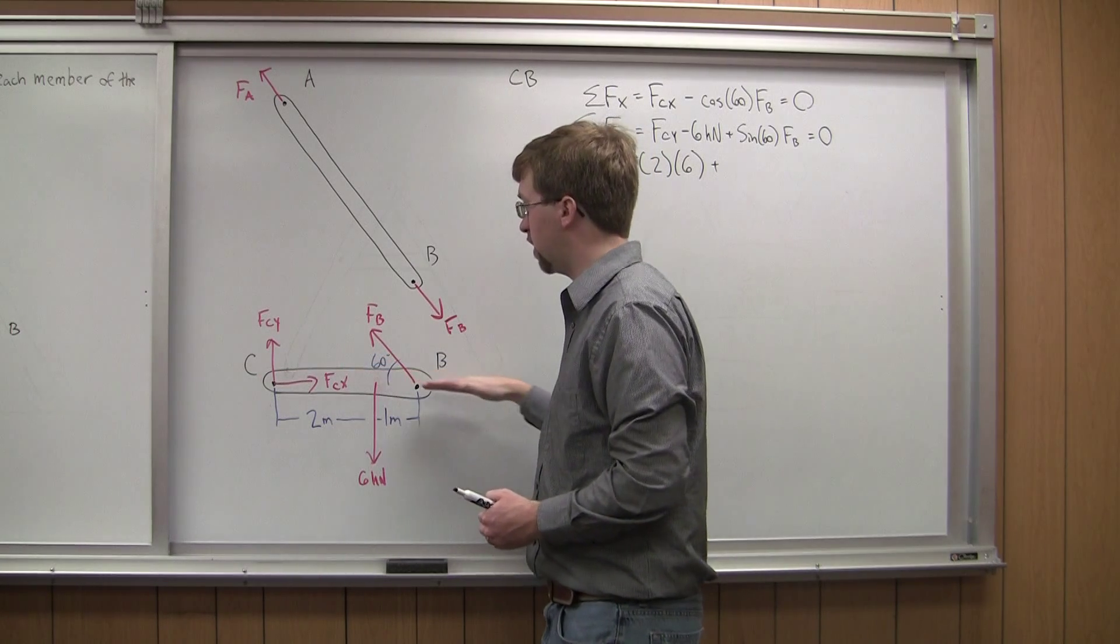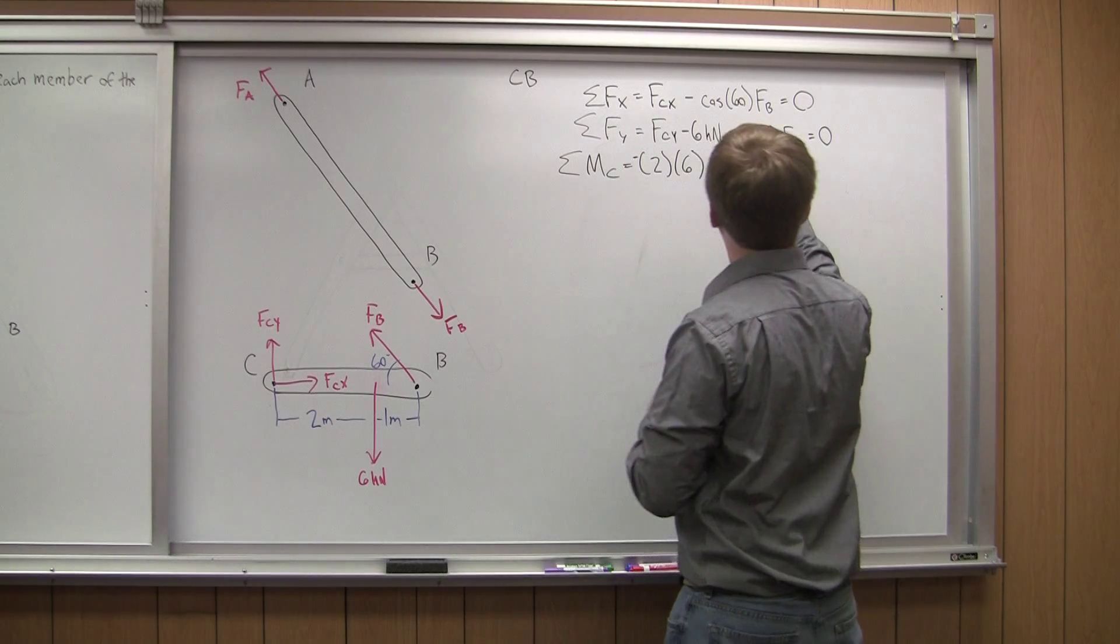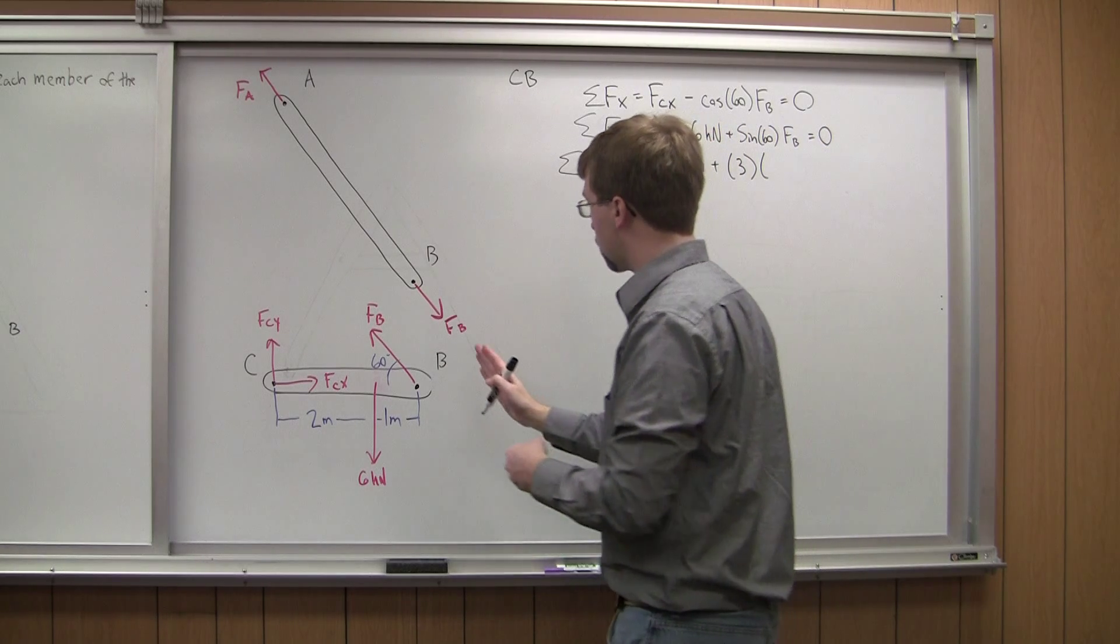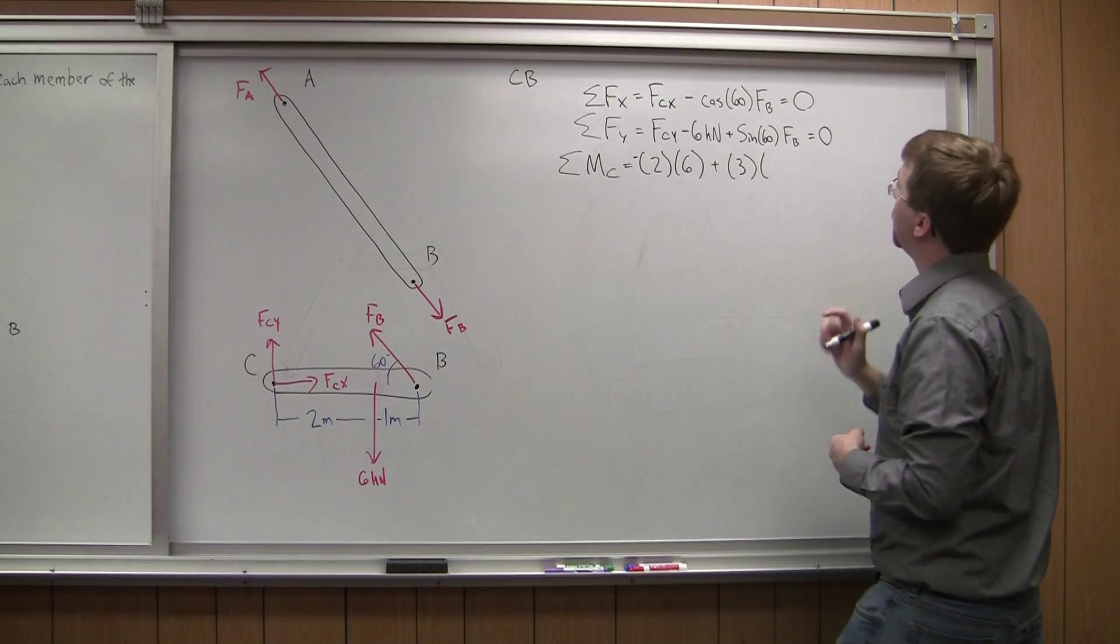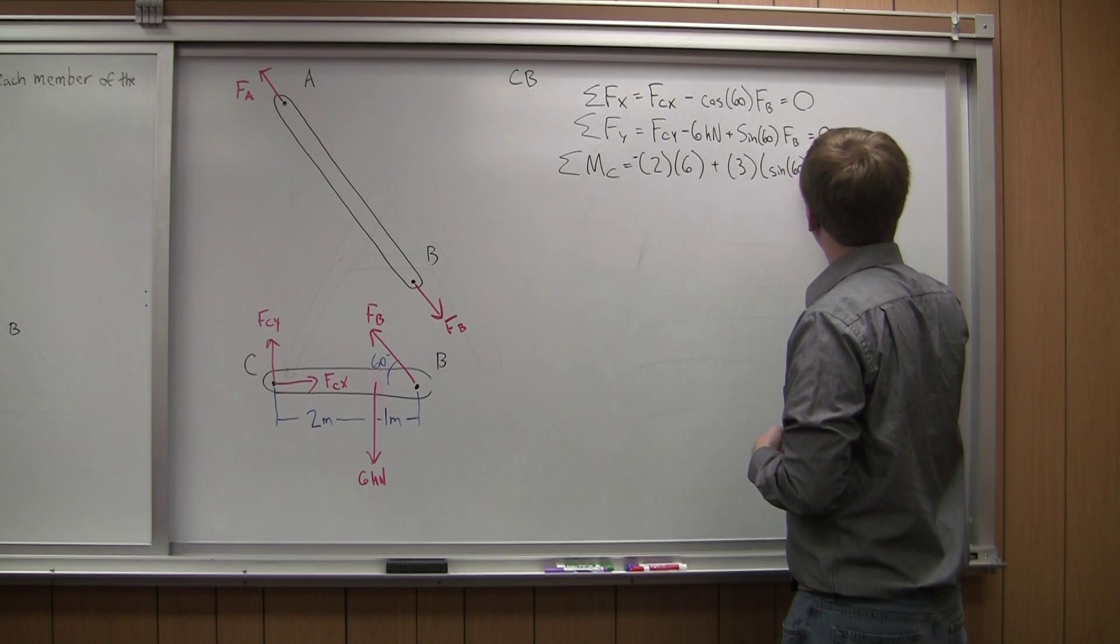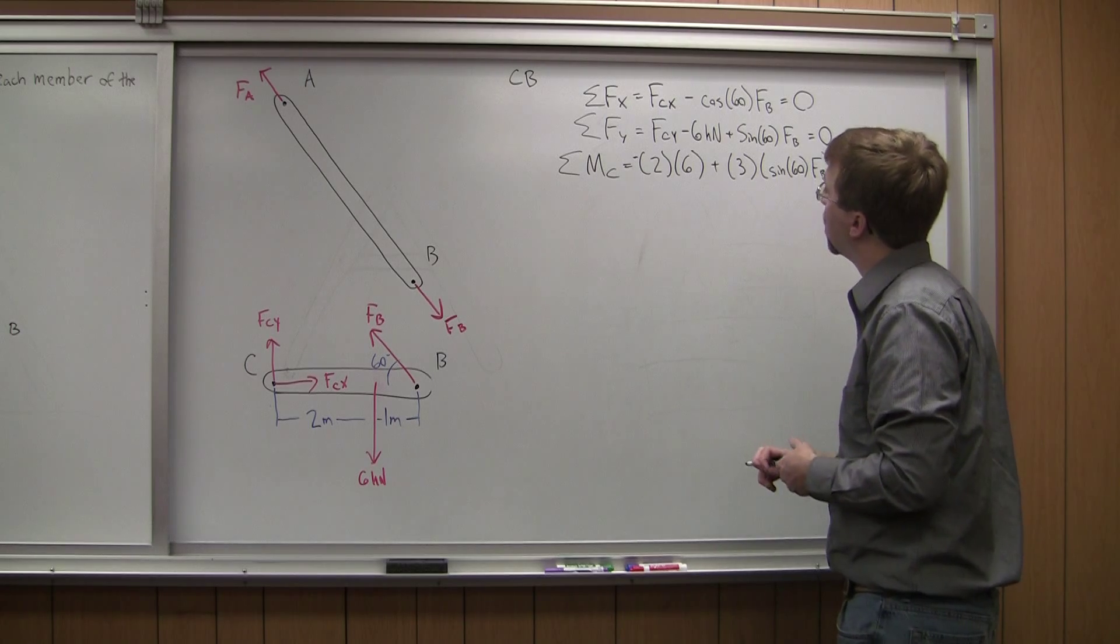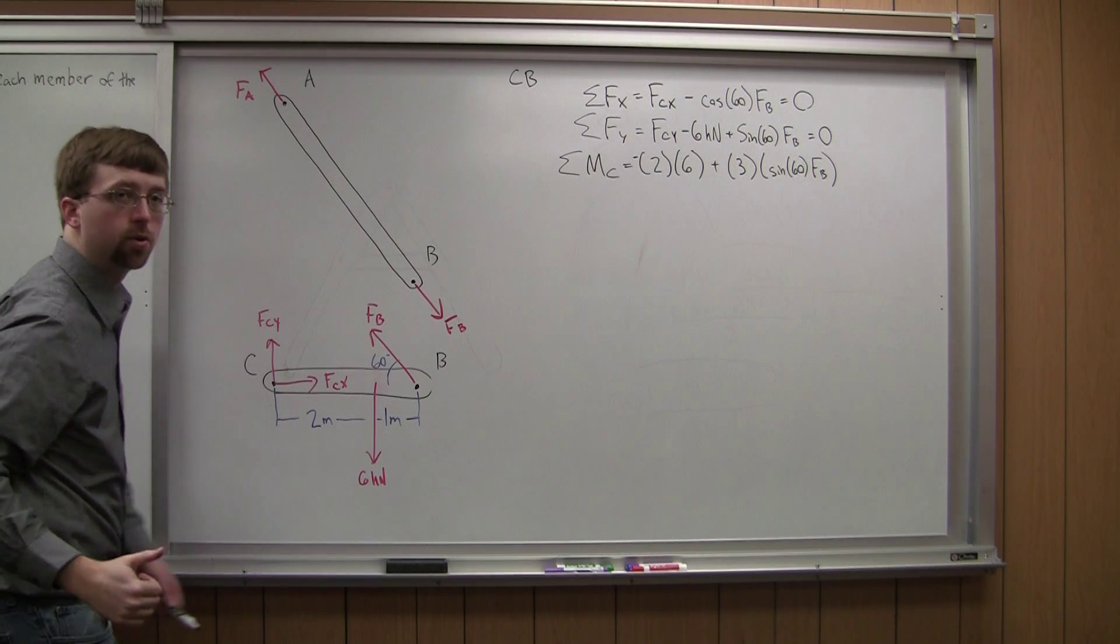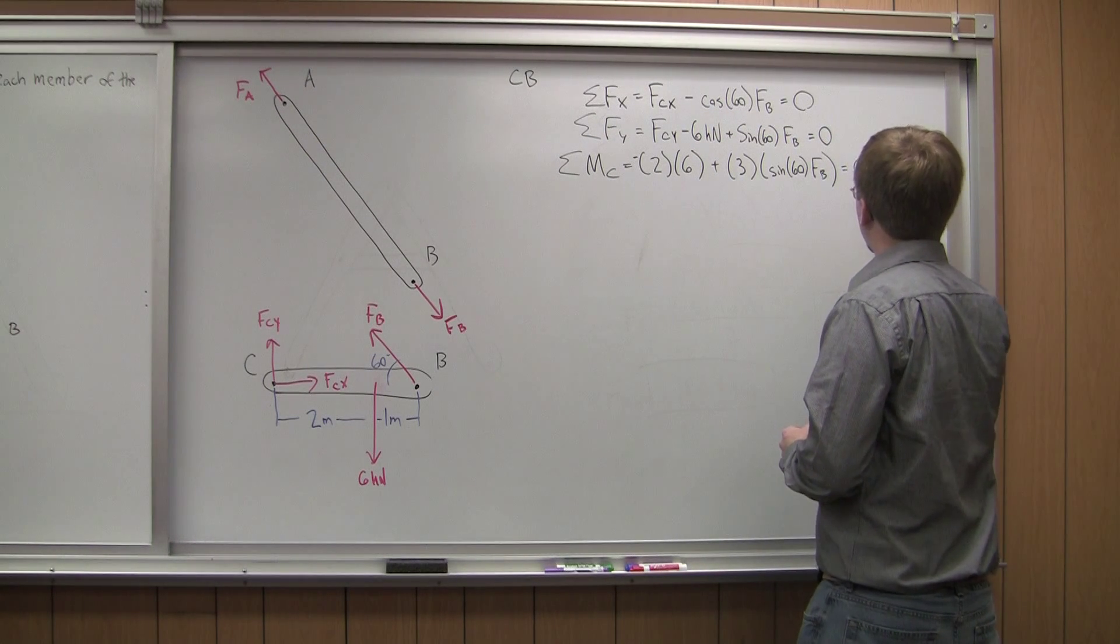So the vertical component would exert a moment, but the horizontal component of FB doesn't exert a moment. So the distance here would be 3 meters. And the force, the vertical component of the force, again, is just equal to the sine 60 of FB. And this is going to cause a counterclockwise rotation. Using my right-hand rule, I know that that is a positive moment. So that is equal to zero.